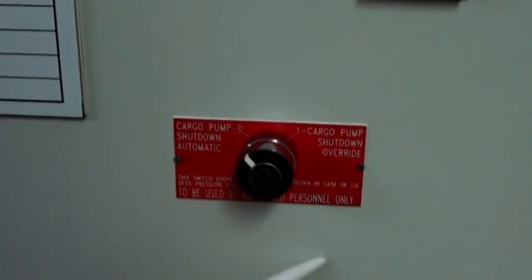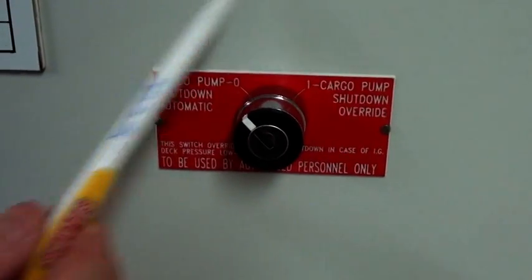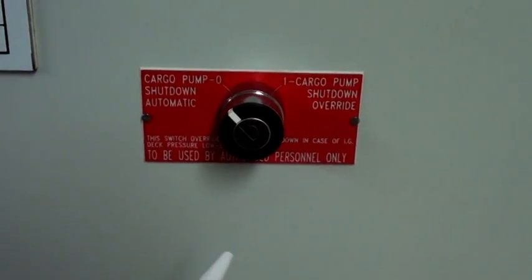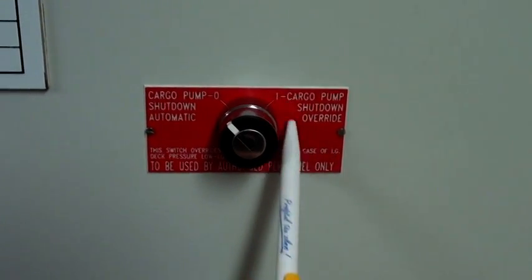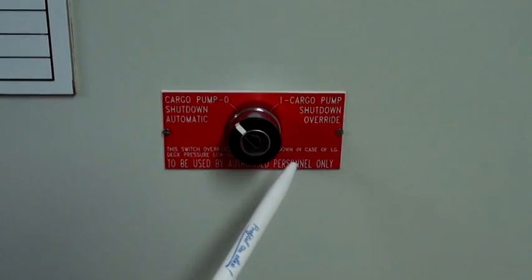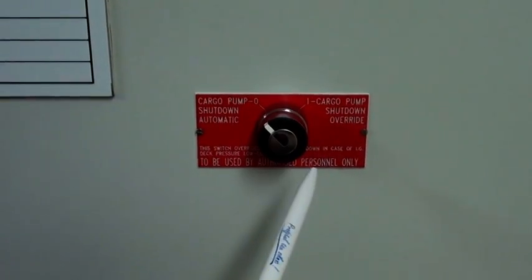On the bottom of the panel you have the overriding key. So one setting is cargo pump shutdown automatic, another setting is cargo pump shutdown overriding.